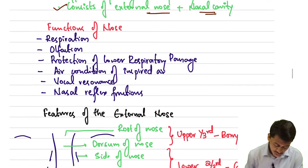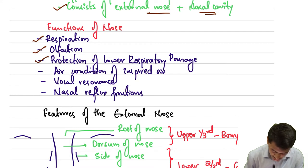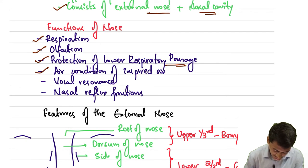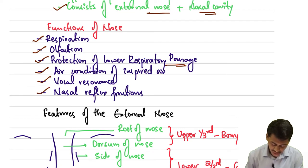What are the functions of the nose? The nose helps in respiration, olfaction, and protection of the lower respiratory passage. It also conditions and humidifies the inspired air, and it helps in vocal resonance when we speak, as well as nasal reflex functions such as sneezing.